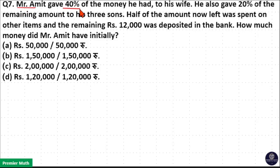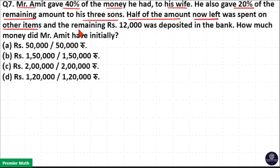Mr. Amit gave 40% of the money he had to his wife. He also gave 20% of the remaining amount to his three sons. Half of the money now left was spent on other items, and the remaining ₹12,000 was deposited in the bank. How much money did Mr. Amit have initially?